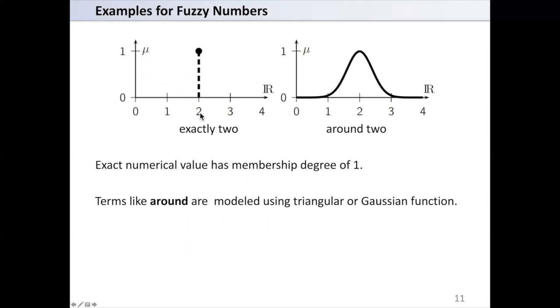Now consider examples for fuzzy numbers. This is the membership function for exactly 2. Here, notice that at x equal to 2, it has a membership value 1, and for all other values of x, the membership value is 0. However, for around 2, the membership value at 2 is 1, and around 2, when we get further away from 2, the value of the membership decreases gradually. Exact numerical value has membership degree of 1. For this example, terms like around are modeled using triangular or Gaussian function as shown in the second example.